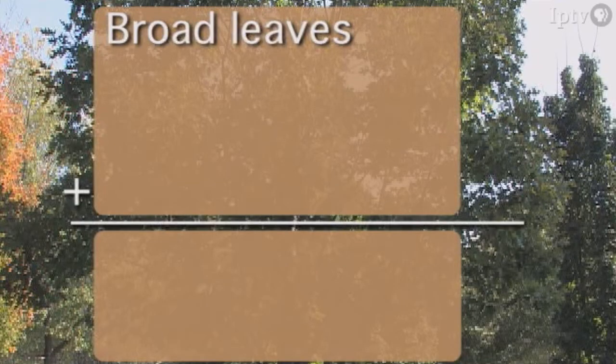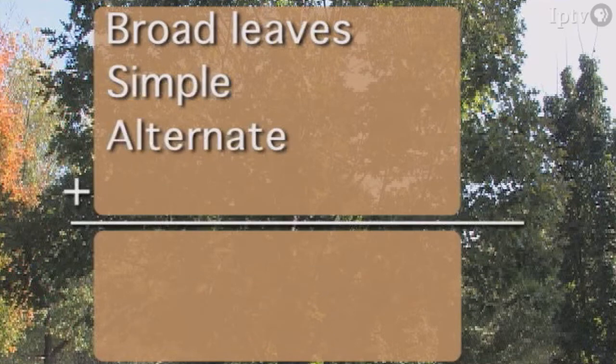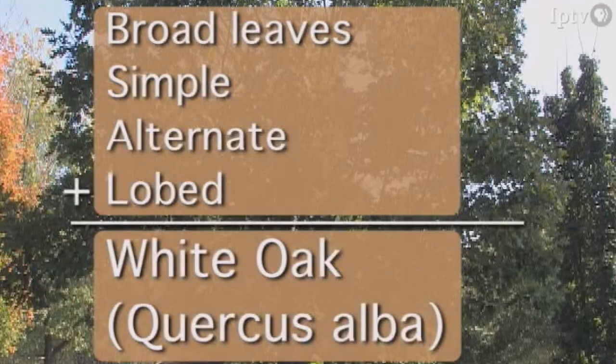So that's the last question. Our findings show that these are broad leaves, they're simple, alternate on the branch, and they're lobed. According to the key, this is a white oak, and the scientific name is Quercus alba.